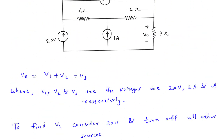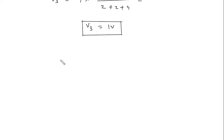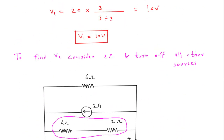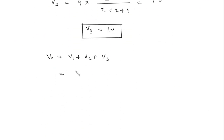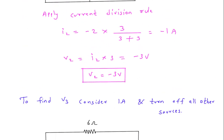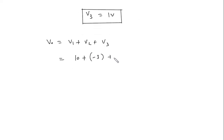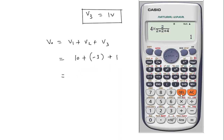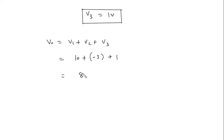Now we can find Vo, which equals V1 plus V2 plus V3. So Vo equals 10 minus 3 plus 1, which equals 8 volts. Therefore, Vo is equal to 8V.